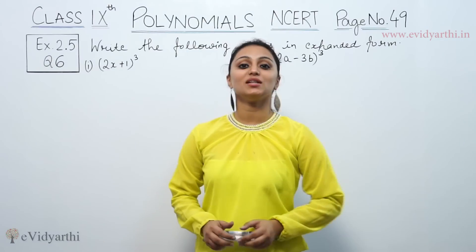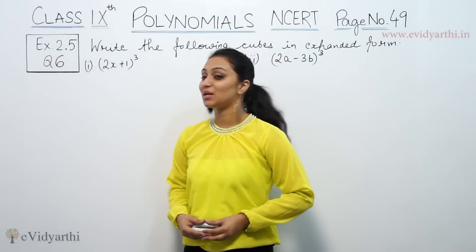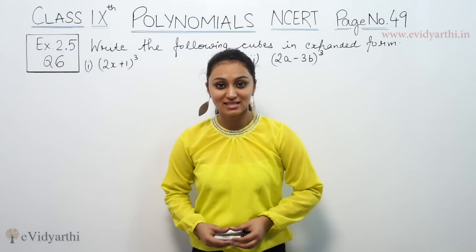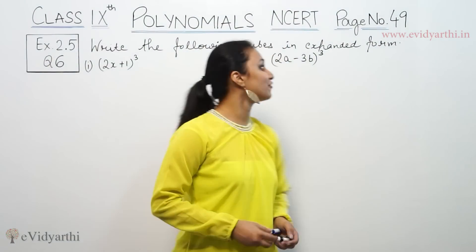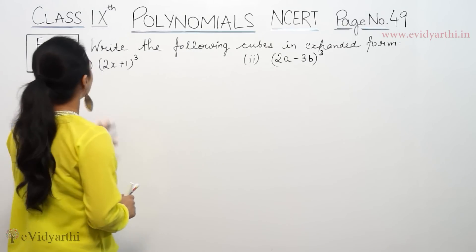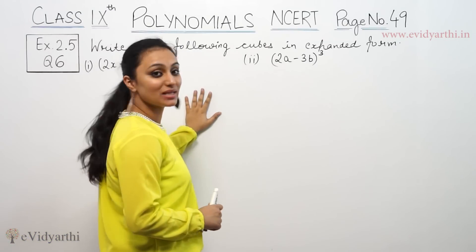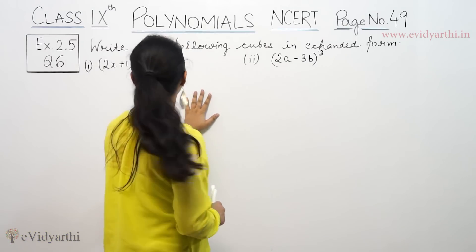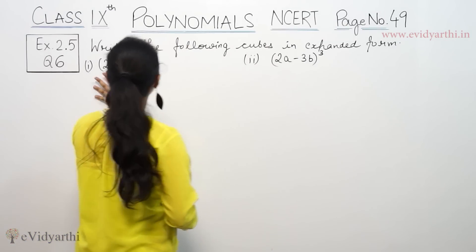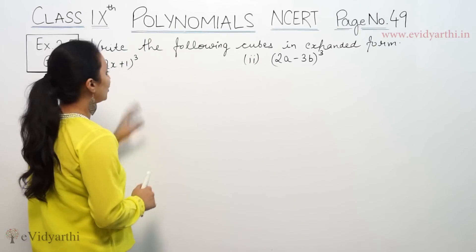Hi, this is Khushbu with another question on polynomials. This is question number 6 from exercise 2.5, page number 49 from MDI. This says: write the following cubes in expanded form. So basically, we have 2x plus 1, whole cube.